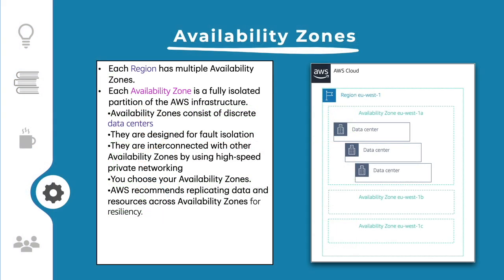Not all services are available in all regions, so check before migrating your infrastructure. There is also some variation in cost between regions. Each AWS region has multiple isolated locations known as availability zones. Each availability zone provides the ability to operate applications and databases that are more highly available, fault tolerant, and scalable than a single data center. Each availability zone can include multiple data centers, each containing hundreds of thousands of servers. They are fully isolated partitions of the AWS global infrastructure, interconnected with high-bandwidth, low-latency networking over fully redundant private networks.